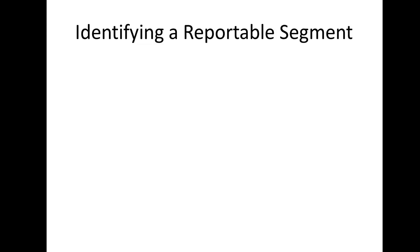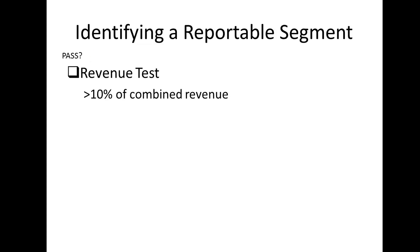There are three screens applied to identify a reportable segment. If any one of these tests are passed, then the operating segment gets separate disclosure. The first test is the revenue test, and can be applied by combining the revenue from all the segments and calculating a 10% threshold. If a segment has revenue in excess of the threshold, then it's reportable.